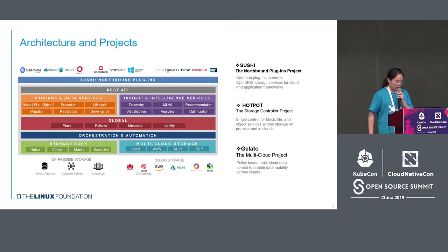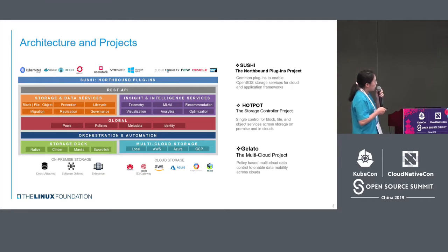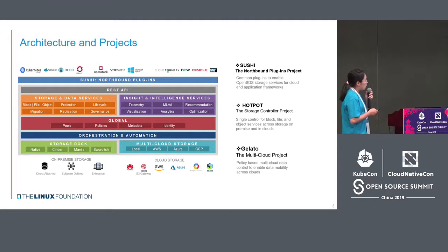And then about the architecture. First, the plugin — we call it MVP. It is the minimum viable plugin with the northbound, and it's for the interaction with Kubernetes and other traditional application platforms.